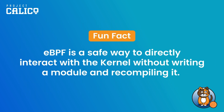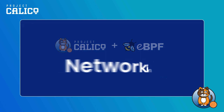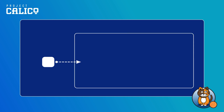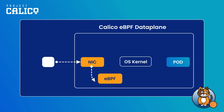The Calico eBPF data plane uses the same concept. Let's take a simple networking example. Let's say there is a packet coming toward your server. If the packet is trying to reach a pod, the first thing it will see is the networking card of your server. When the packet comes to the NIC, Calico uses its eBPF programs to intercept that packet at the earliest point of entry and send it directly to the pod. This completely bypasses the kernel networking stack.